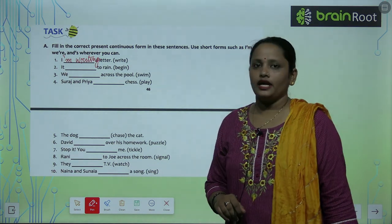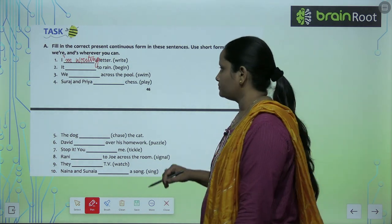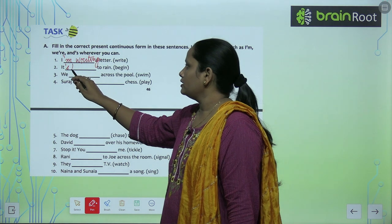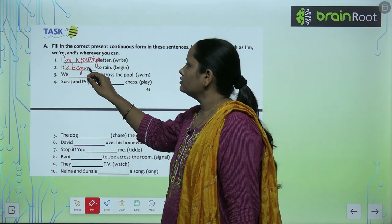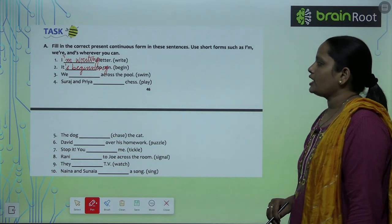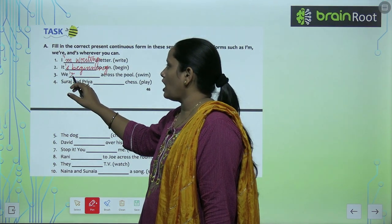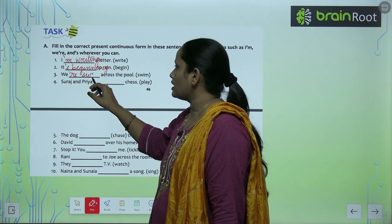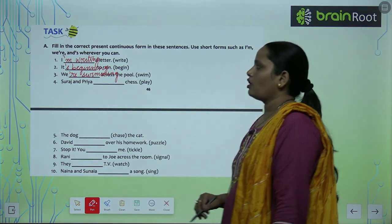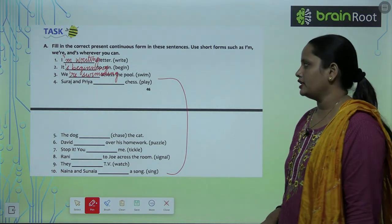The next one is 'It ___ to rain.' With 'it' we use 'is,' so it becomes 'It's beginning to rain.' Third: 'We ___ across the pool (swim).' With 'we' we use 'are,' so: 'We're swimming across the pool.' Similarly, children, you have to complete the remaining questions.